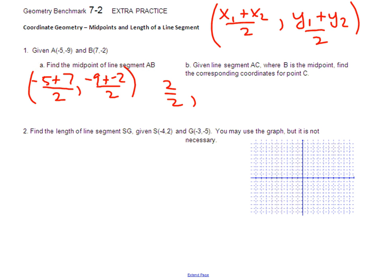Negative five plus seven is two. Negative nine plus negative two is negative eleven. If you can reduce them, reduce them. In fact, I'll just make this one negative 5.5. You can leave it as negative eleven halves if you want, but make sure you make the two over two a one. It's pretty straightforward stuff for the midpoint formula. I'm going to erase this, so pause it if you need to copy something down.